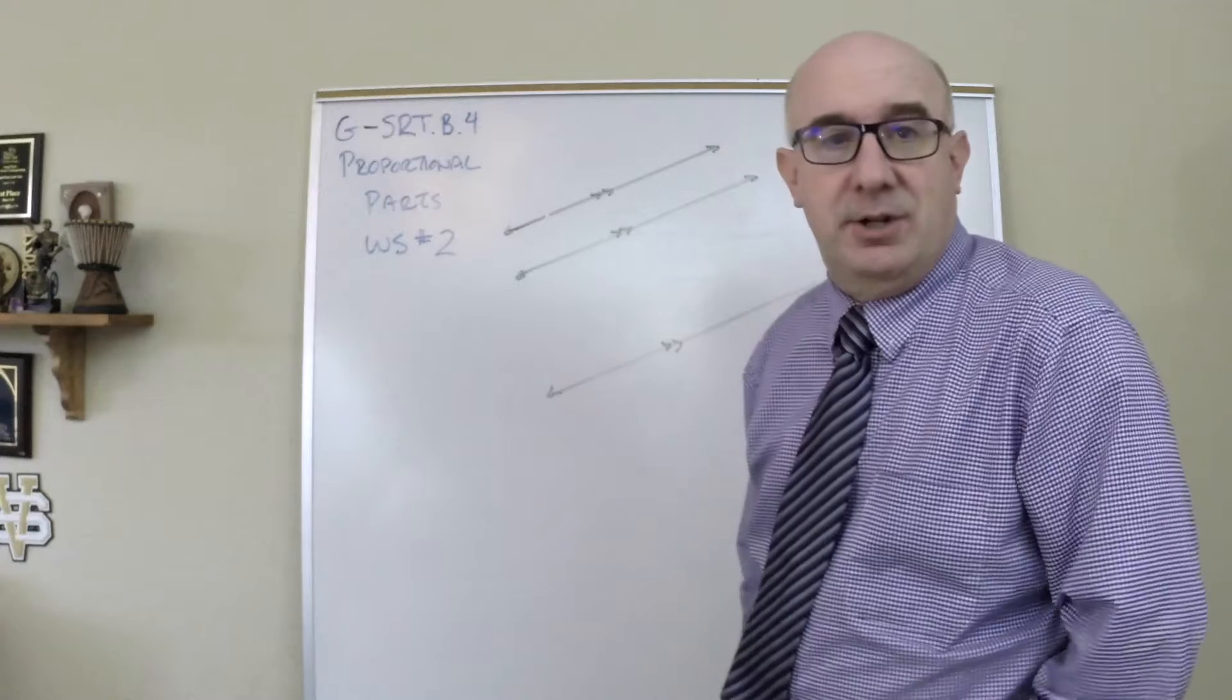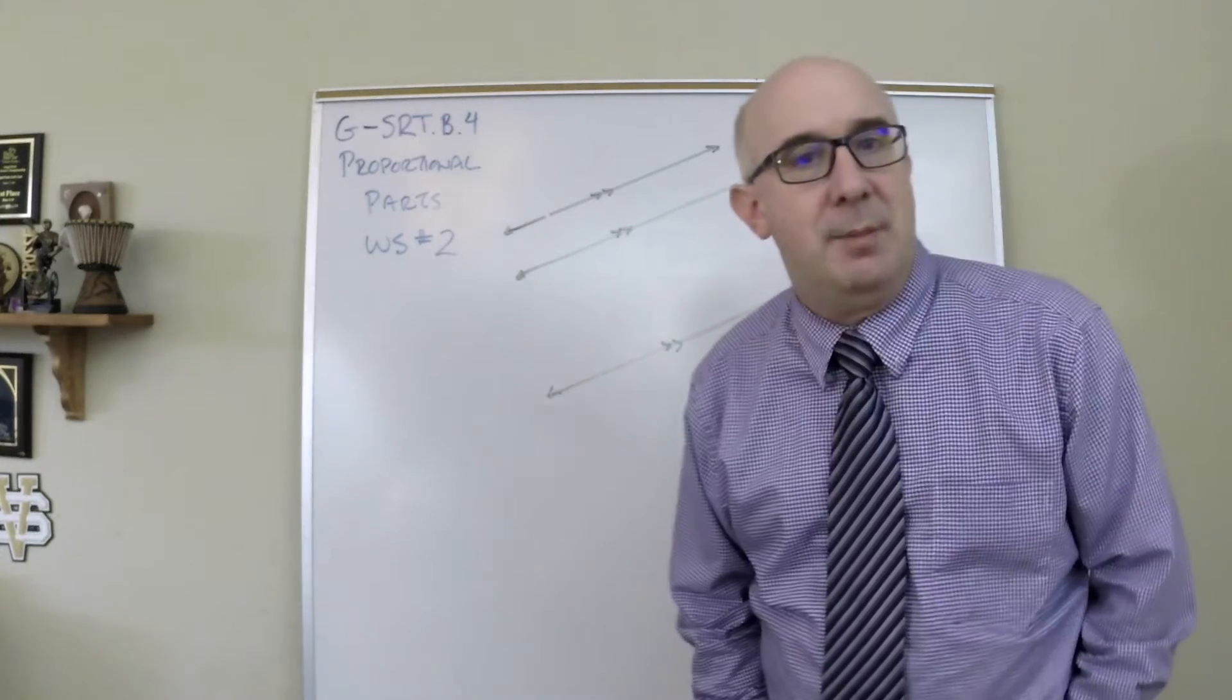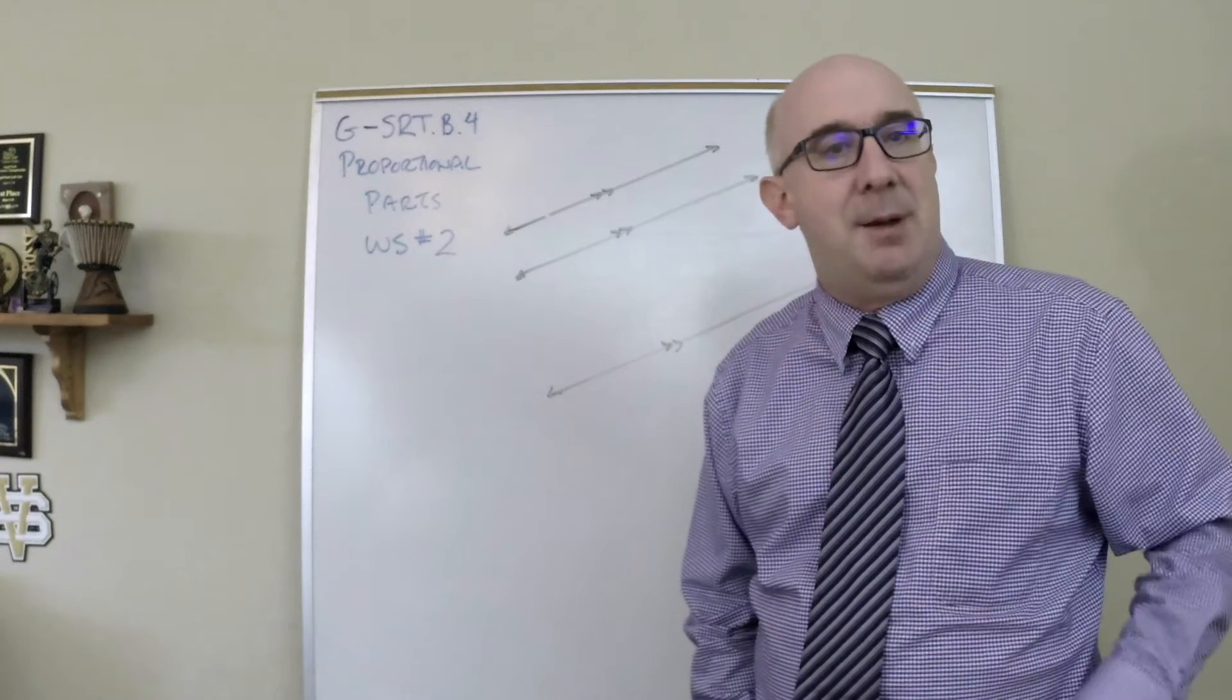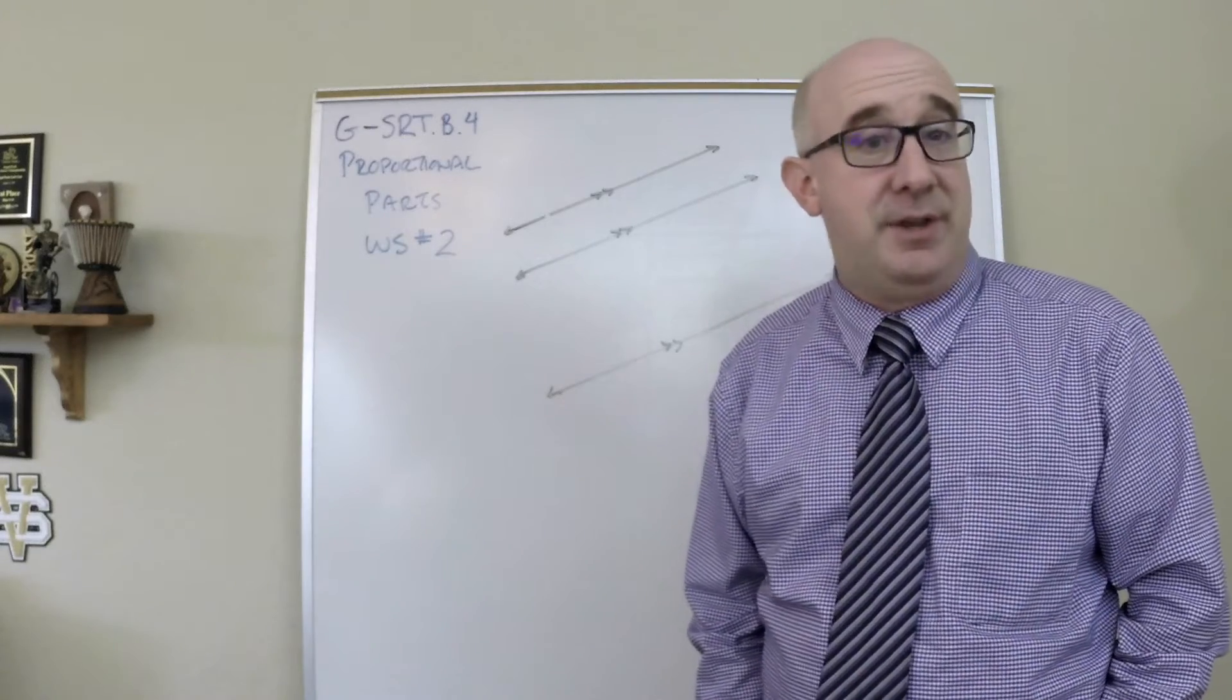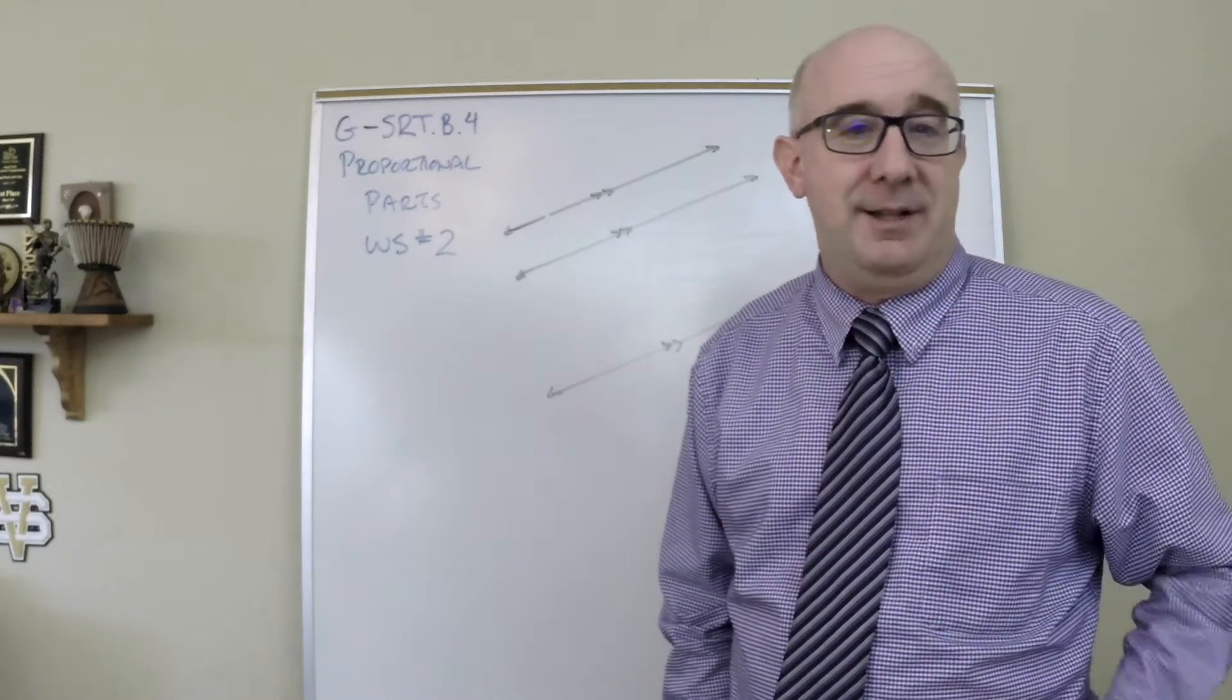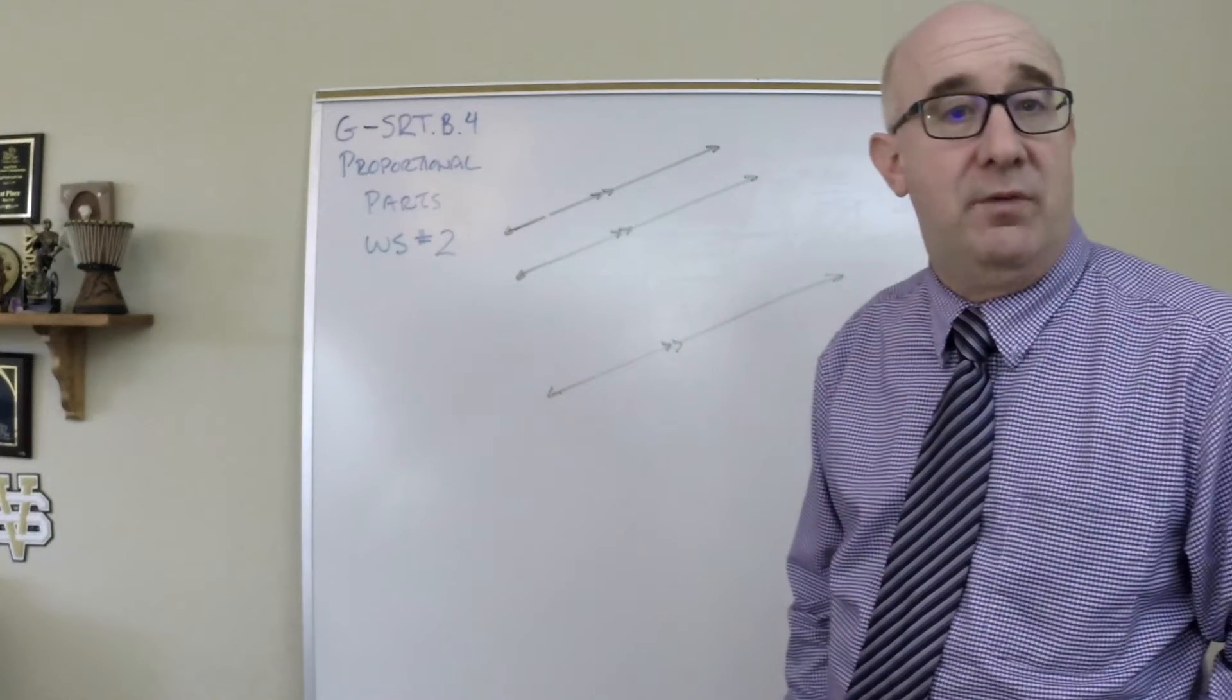Let's take a look at GSRTB4 worksheet 2. This is all about what we call proportional parts. Previously we established something called the side splitting theorem or the proportionality through parallel lines, and this is basically the worksheet where we just solve a bunch of values using those theorems.